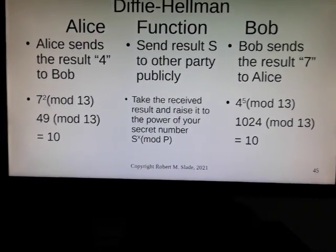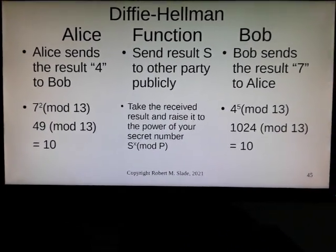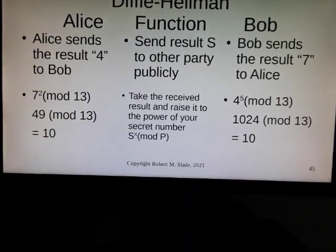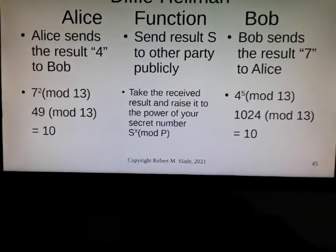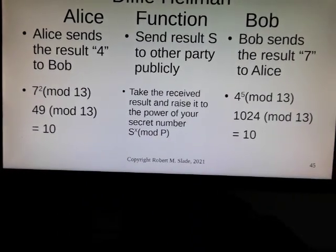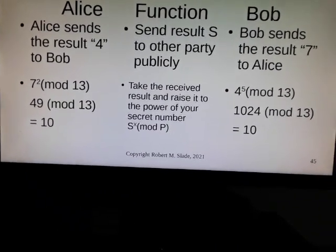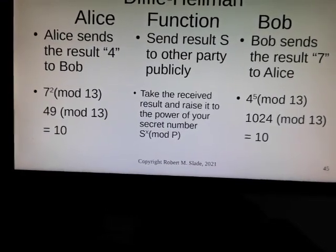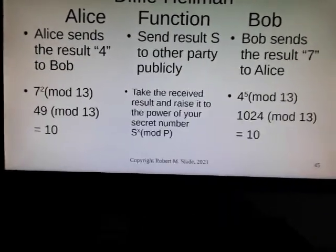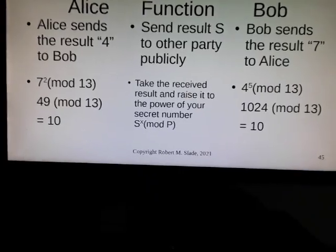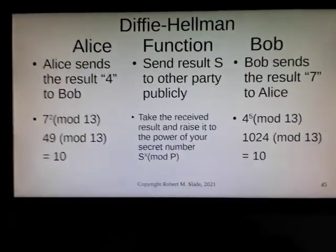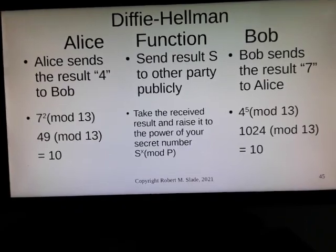Alice sends her result, 4, to Bob publicly. Bob sends his result, 7, to Alice publicly. They are sending this — it is public information.